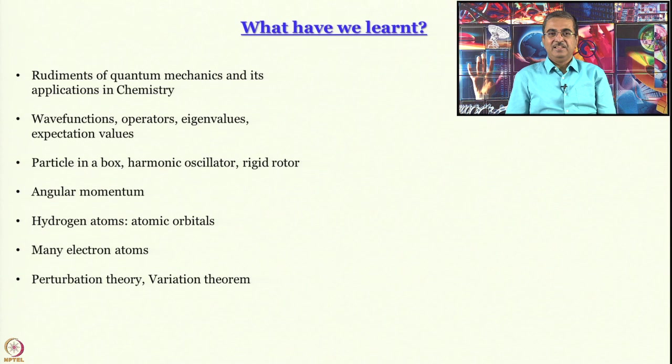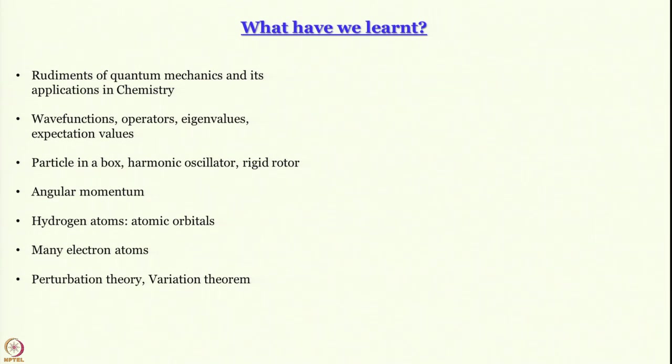But that was only the beginning. We learned approximation techniques - perturbation theory, well we have learned only time-independent perturbation theory here, and variation theorem, by which we learned how to handle systems that cannot be solved exactly - Schrödinger equation of which cannot be solved exactly. If the deviation from an exact system is small we learned we can use perturbation theory. But we also realized that first order perturbation may not be enough in some cases - you might need higher order perturbation terms also.